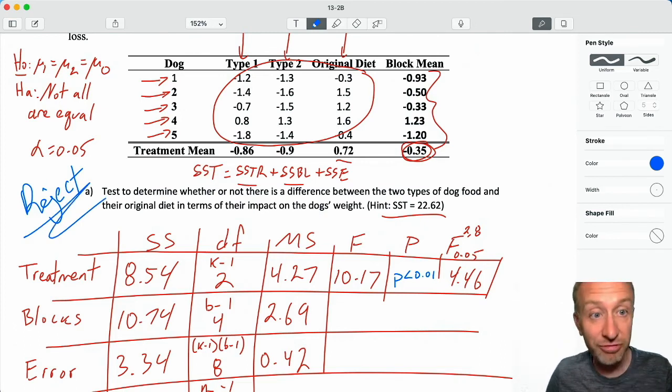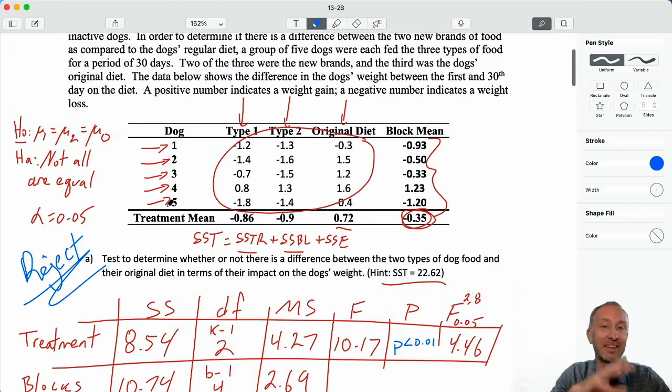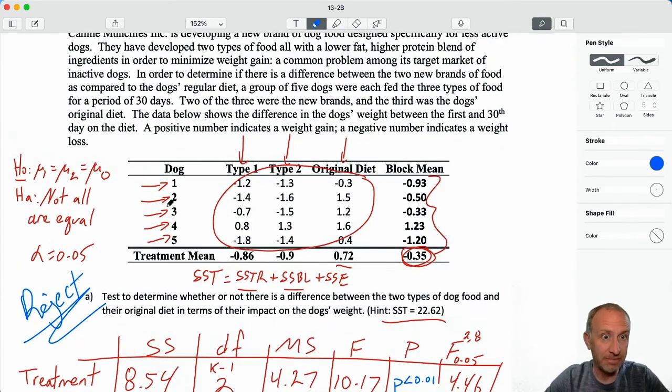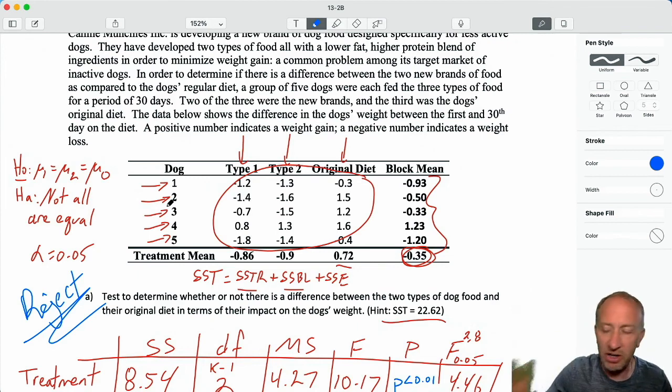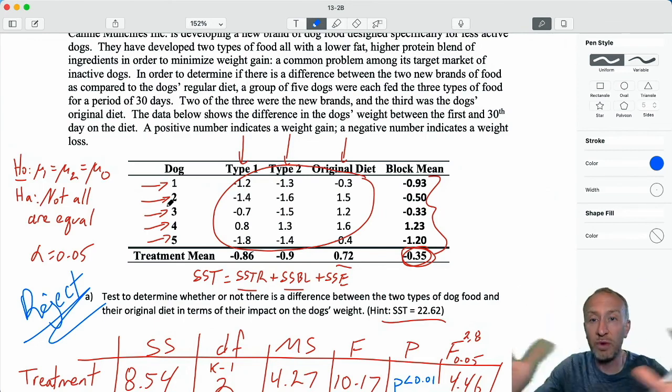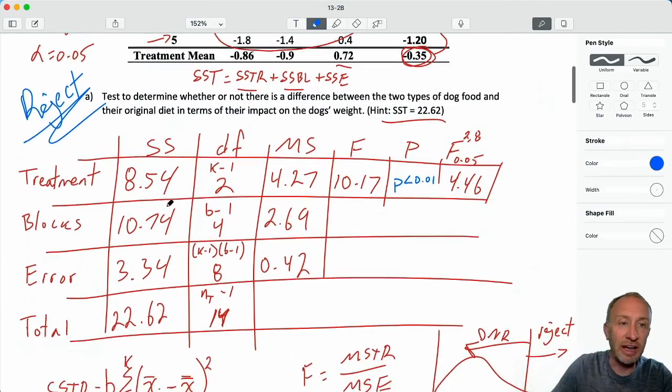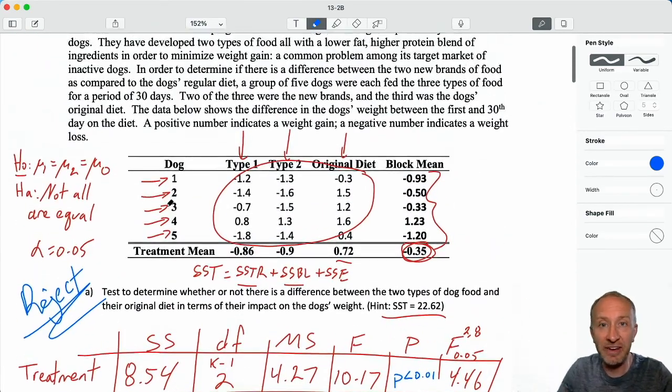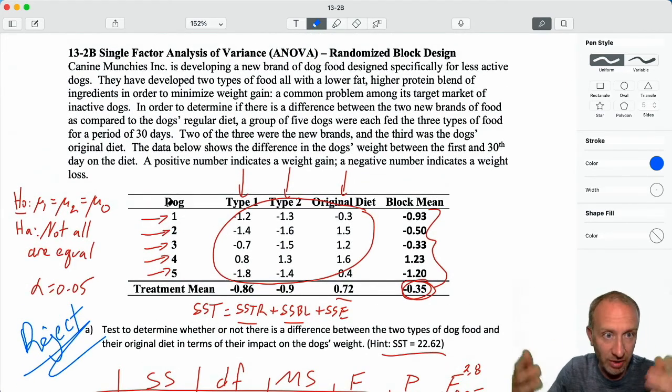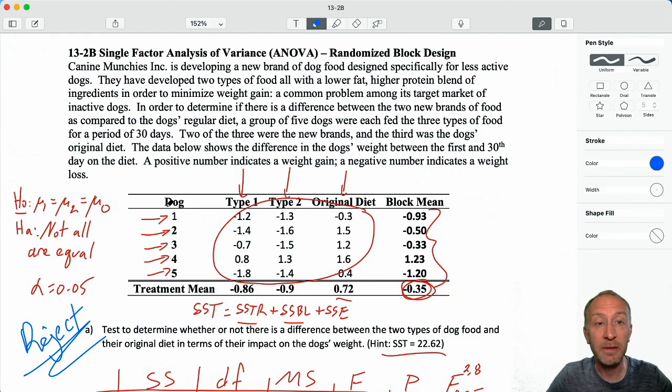I do have pretty strong evidence here to show that there is at least one of these samples that is statistically different from the others. Looking at those samples, I could probably take a pretty good guess. If we wanted to know for sure, we can go through and perform a Fisher's LSD, just like we did in the completely randomized ANOVA. I'm not going to do it here. We've already gone through a few examples of that. The process is the same. We have our second randomized block ANOVA. We have strong evidence here to reject, which means we do have evidence to show that at least one of these diets, one of these types of dog food, does result in a statistically significant difference in the dog's weight.